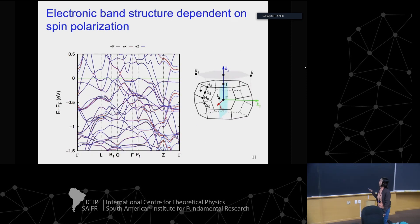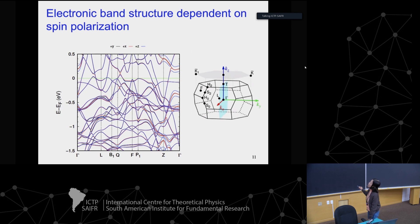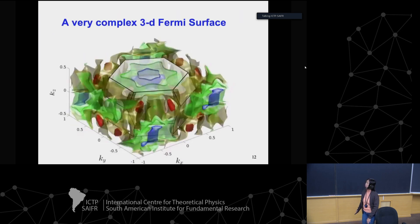The band structure is different depending on the polarization of the system. This DFT calculation incorporates both U and spin-orbit coupling, and shows that depending on whether the moment points out of plane or in plane, the band structure differs. Because the band structure is different, the Weyl cones that form in this system are different depending on the magnetization direction.